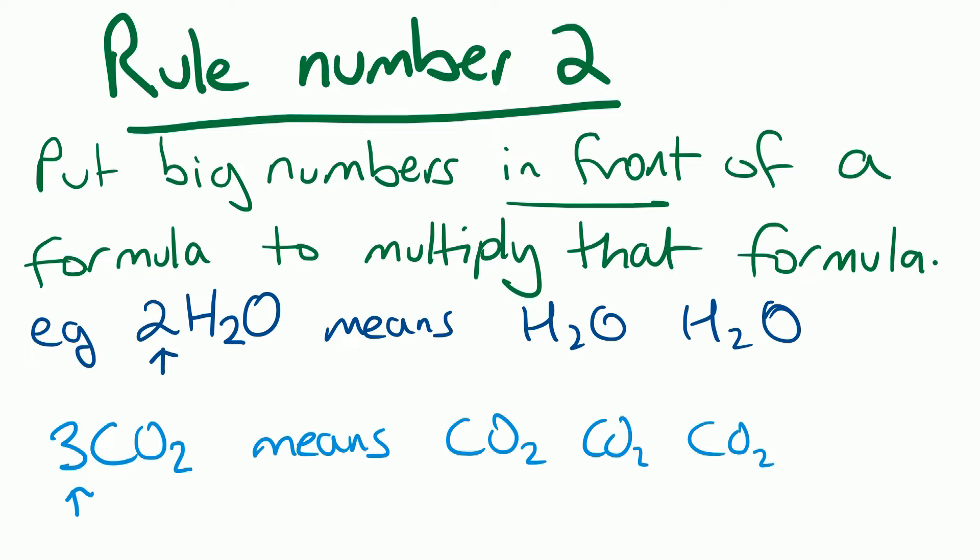What we can do — rule number two — is put big numbers in front of a formula to multiply that formula. For example, 2H2O means we've got two molecules of H2O, and 3CO2 means we've got three molecules of CO2.